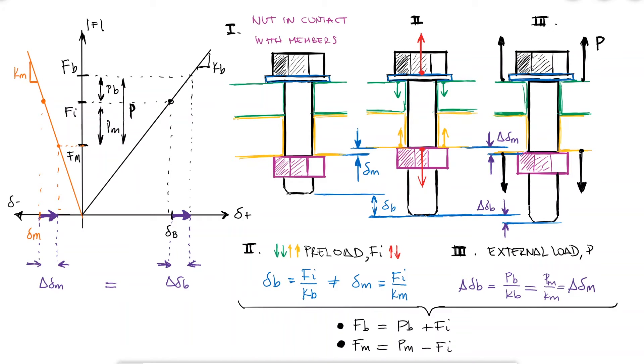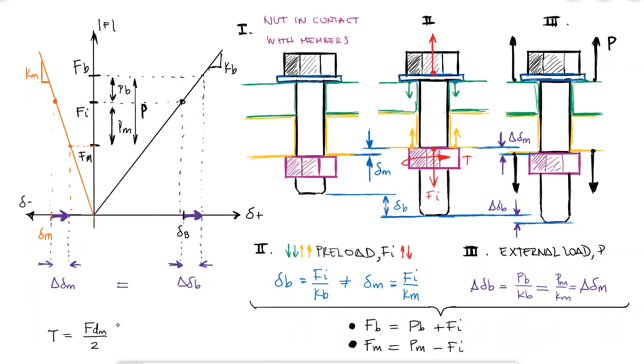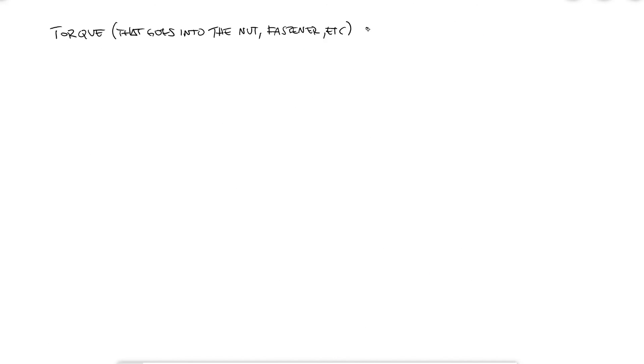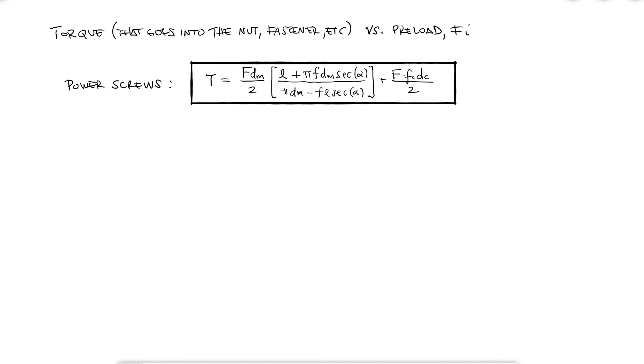Finding the preload is a very easy process if we comprehend how the torque and the force are related in threaded members. Remember the power screw equations we derived a couple of videos ago? As I mentioned then, they don't only apply for power screw applications. Since the interaction between the threads of both threaded members are the same, for example an actual bolt and nut, the relationship is still true, with F being the force of the preload Fi.